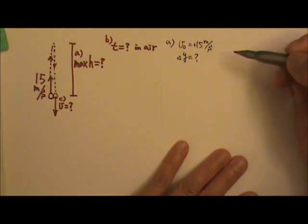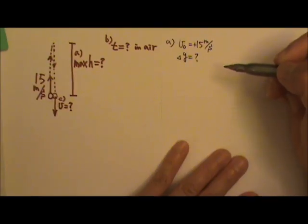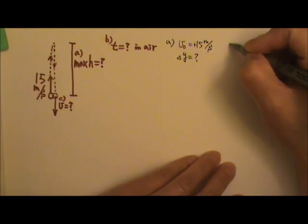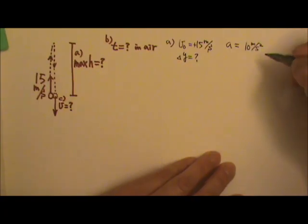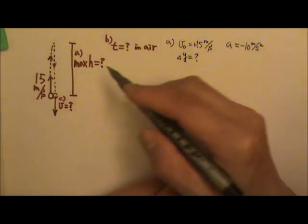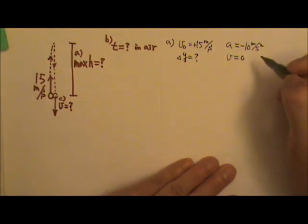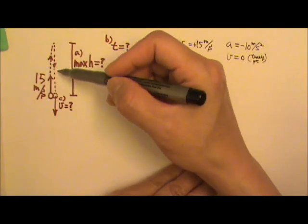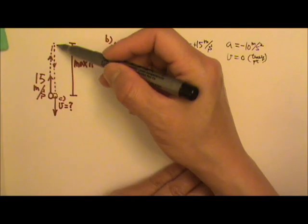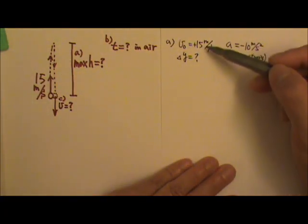We need to know three things for a constant acceleration problem. We know that the acceleration is the gravitational acceleration, so a is 9.8 meters per second squared — I'm just going to round it to 10. It is a negative acceleration because it is a downward acceleration. We also know that at the maximum height, the velocity is zero because it is a turning point. Velocity is always zero at the turning point; the object has to first slow down to a momentary stop before starting to move in the opposite direction. So we know these three things and we are looking for delta y.